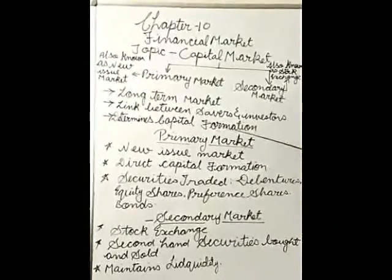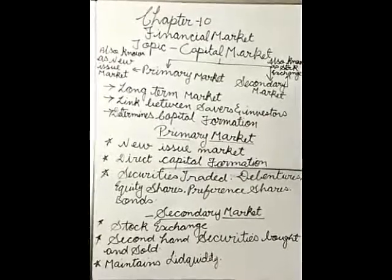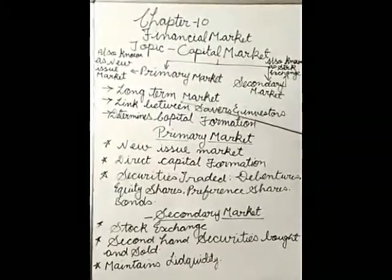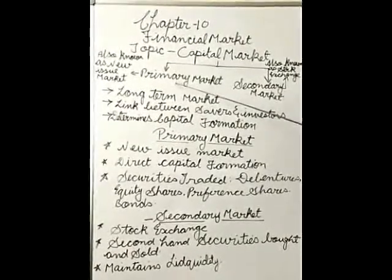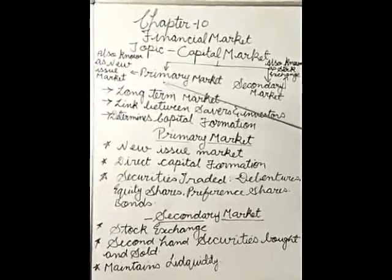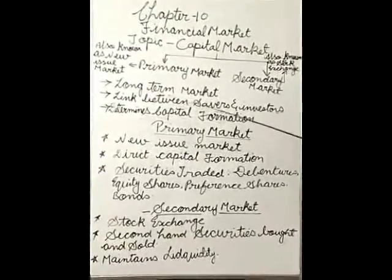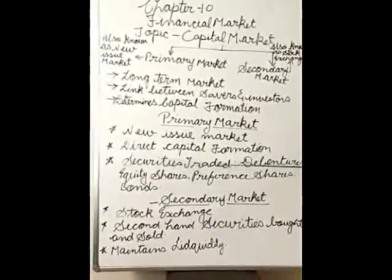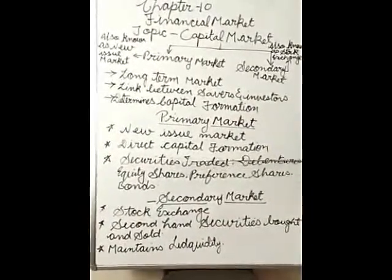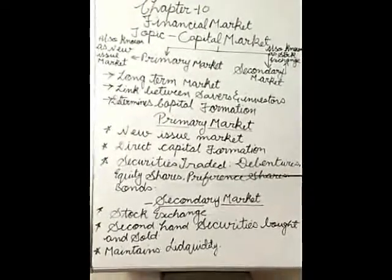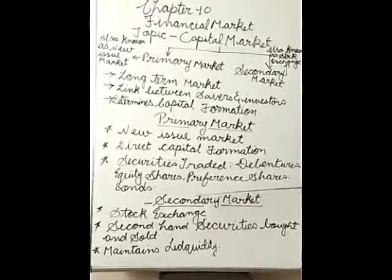The first bifurcation is the primary market, also known as the new issue market. Direct capital formation takes place here because securities are offered by business firms and subscribed or bought by savers for the first time, so the money moves from saver to the investor. The securities traded in this market include debentures, equity shares, preference shares, and bonds.